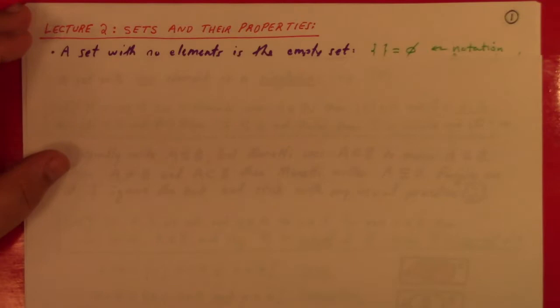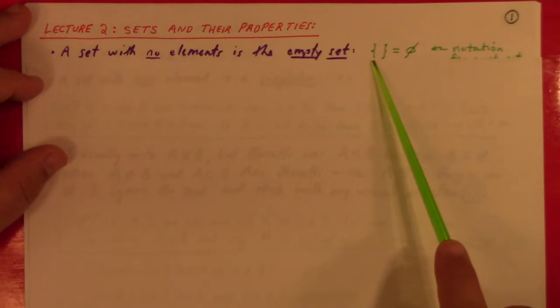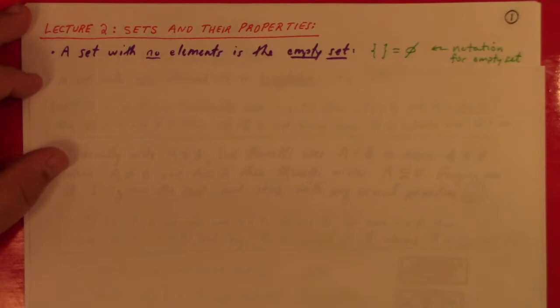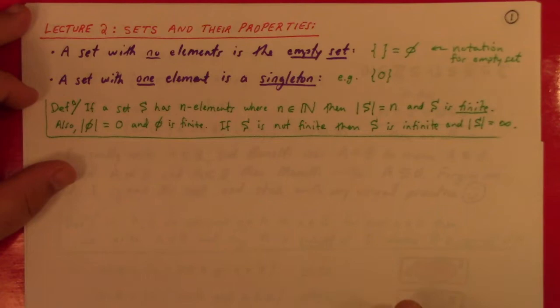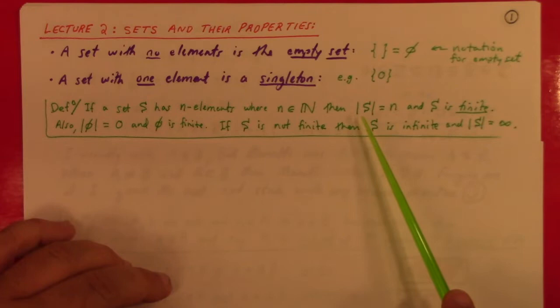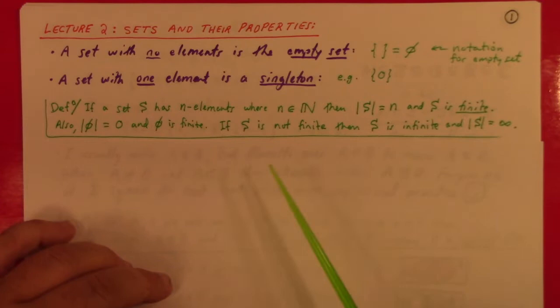Mostly this is language. A set with no elements is the empty set — notation: curly braces or the ∅ symbol. A set with one element is called a singleton; for example, the set just containing zero. Definition: if a set has n elements where n is a natural number, then we say the cardinality of S is n, or the size of S is n, and S is finite.